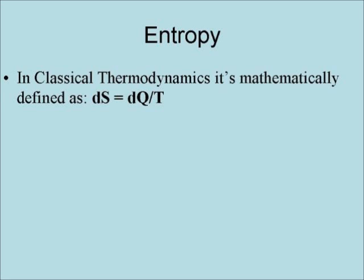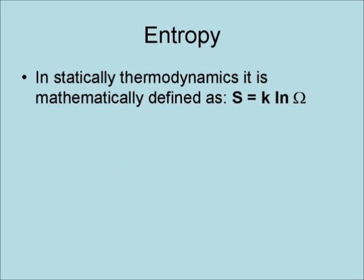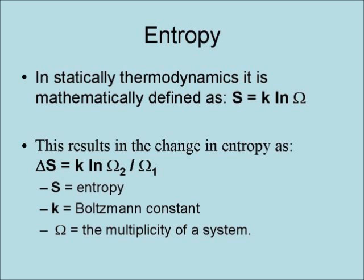In classical thermodynamics, it is mathematically defined as dS equals dQ over T. This results in the change in entropy as dS equals Q over T, where S equals entropy, Q equals heat energy, and T equals temperature. In statistical thermodynamics, it is mathematically defined as S equals k times the natural logarithm of omega. This results in the change in entropy as dS equals k times the natural logarithm of omega 2 over omega 1.